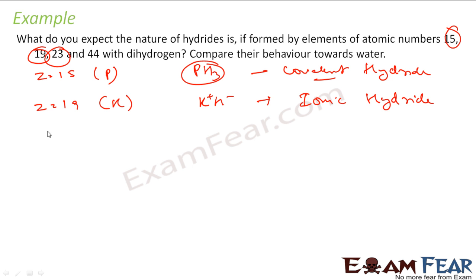The next is 23. This is a transition metal, so it will form interstitial hydride.